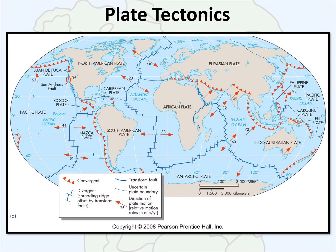We know today that the earth's crust is divided into tectonic plates, which are bounded by these features that often exist on the sea floor — ridges and trenches. But the theory of plate tectonics didn't come about until the 1950s and 1960s. It wasn't fully accepted as part of our understanding of how the earth's surface has changed until that time.